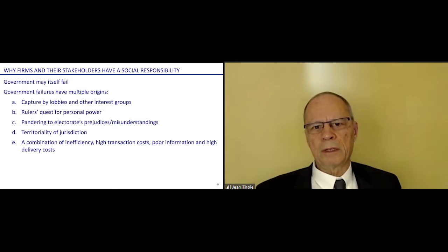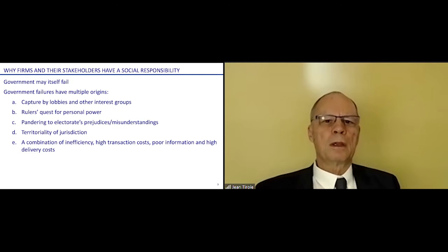In a sense, that's because there is a double failure—failure of the market and failure of the government. The government may fail for multiple reasons. It may fail because it's captured by lobbies and other interest groups, because the rulers have a quest for personal power, because the governments may pander to electorates' prejudices and misunderstandings, because bad things happen in other jurisdictions. For example, child labor.